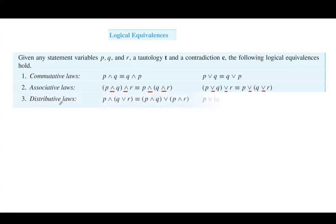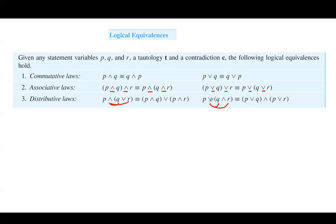The third law is the distributive law. You can distribute AND over OR: P AND (Q OR R) can be written as (P AND Q) OR (P AND R). You can also distribute OR over AND: P OR (Q AND R) is equivalent to (P OR Q) AND (P OR R).